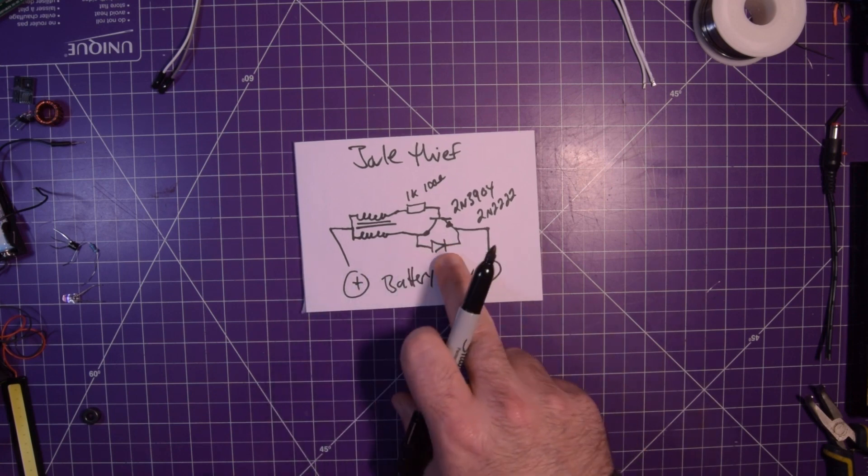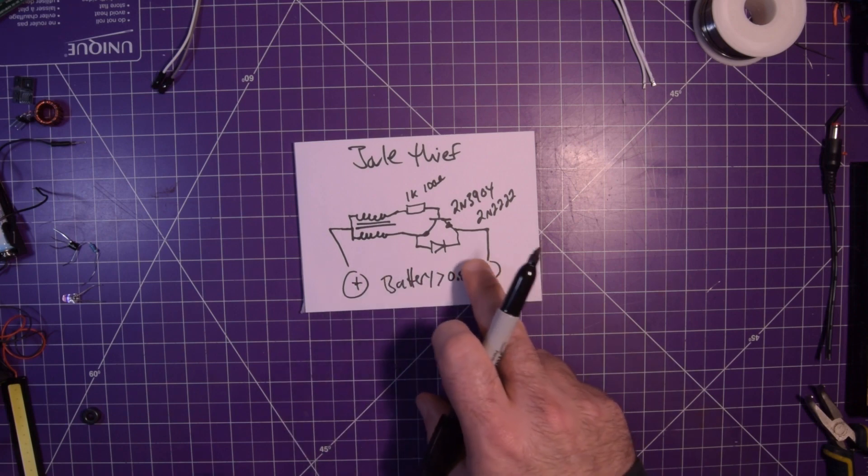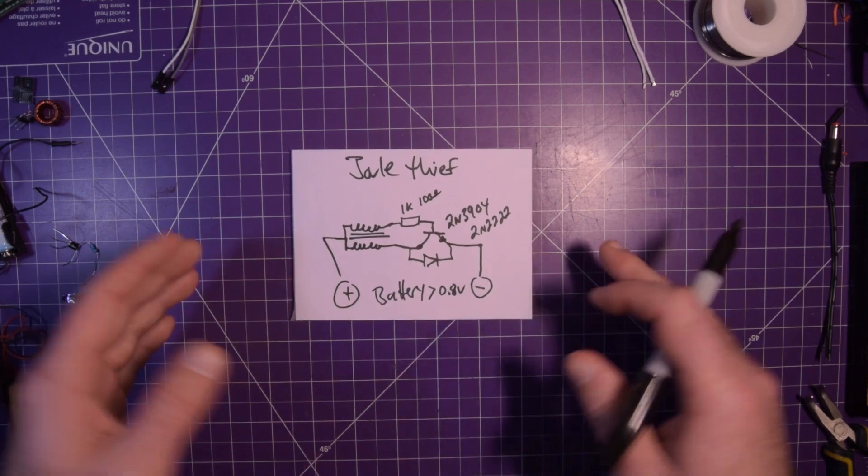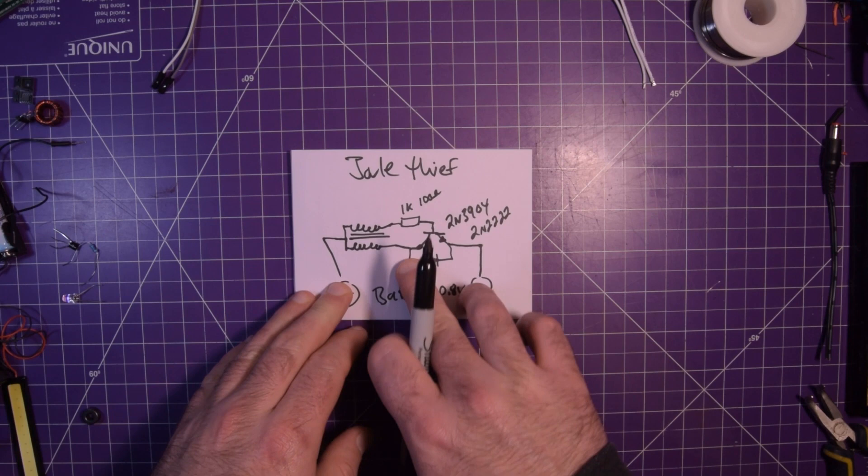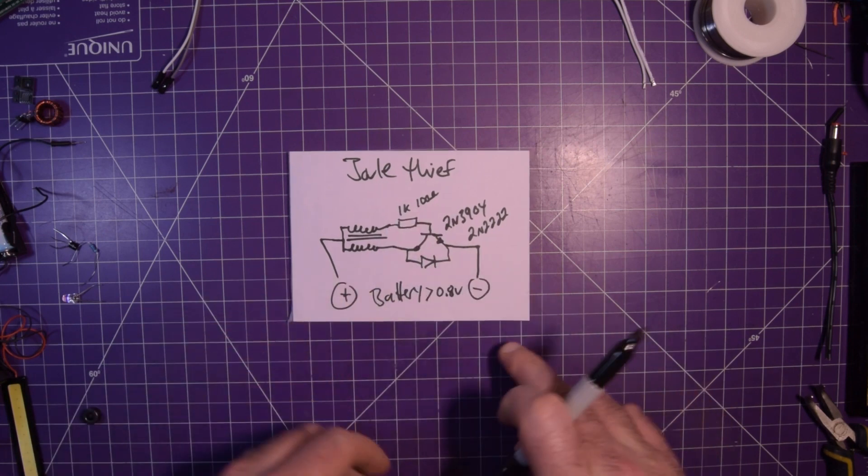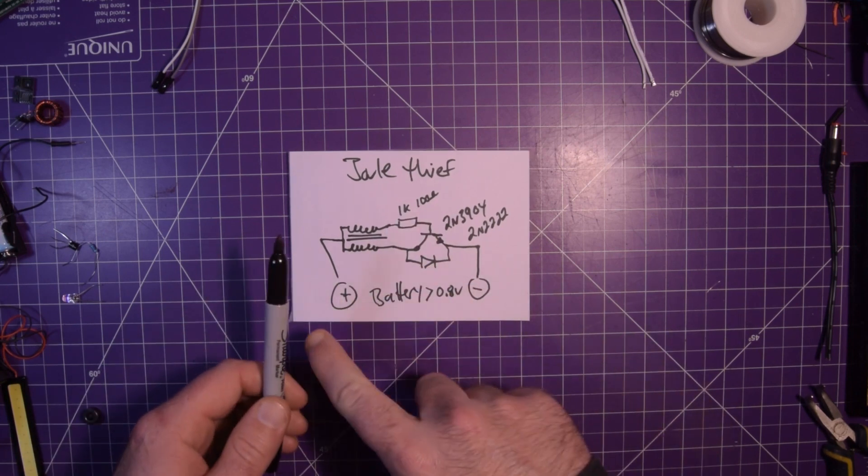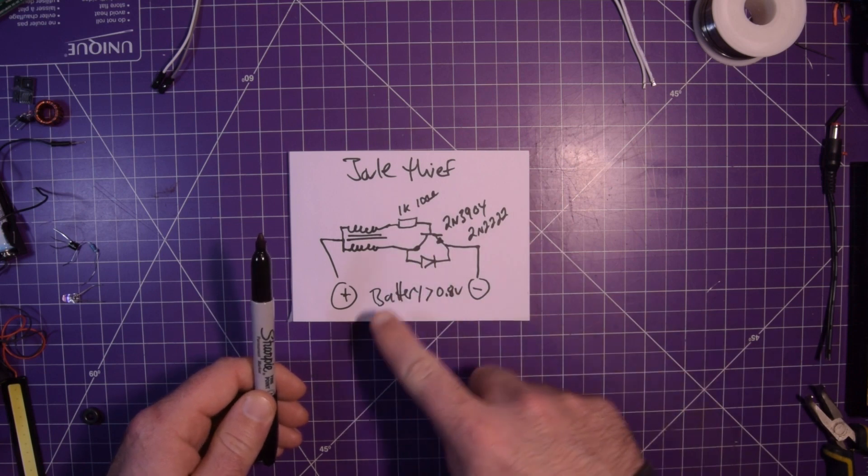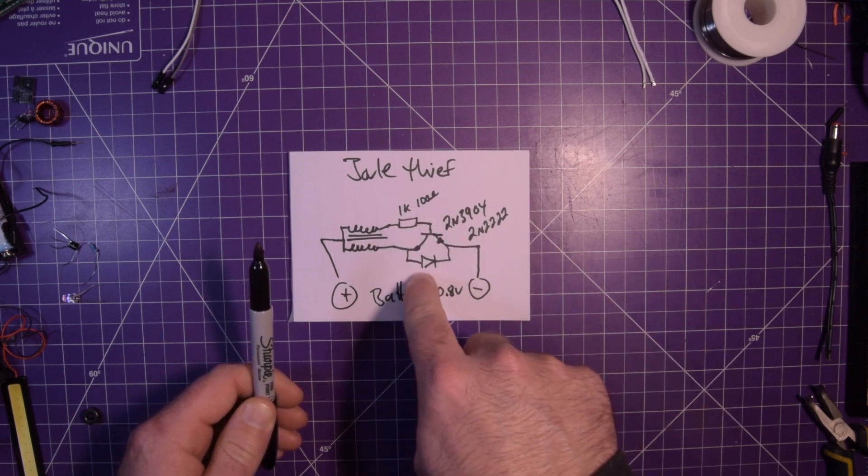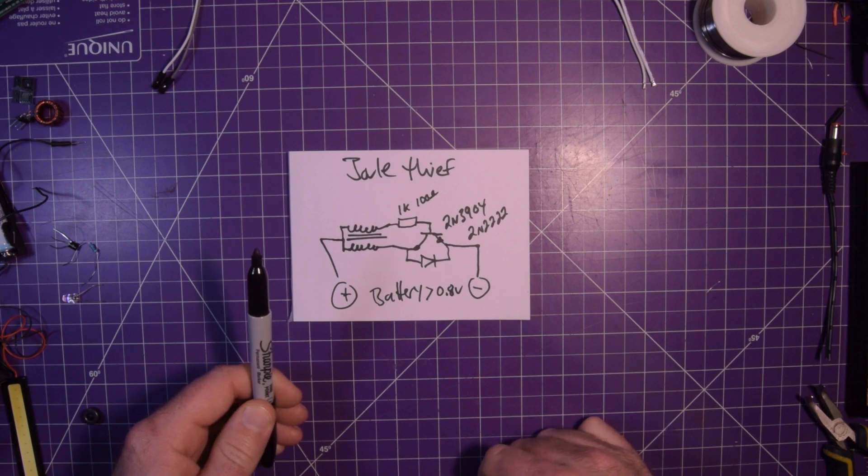Now you won't get all the current as if you had this LED on a regular 5 volt source with a dropper resistor, because obviously this will be an oscillation which will be pulsed, but you'll still have enough to light that LED and you'll see it's going to be pretty bright.